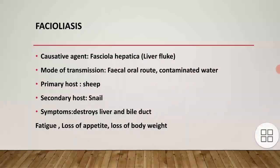The second one is fascioliasis, caused by Fasciola hepatica, commonly called liver fluke. Mode of transmission is fecal-oral route or contaminated water. Primary host is sheep, secondary host is snail, and the reservoir host is man, who gets infected accidentally through infected water. Symptoms include destroyed liver, fatigue, loss of appetite, and loss of body weight.